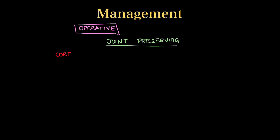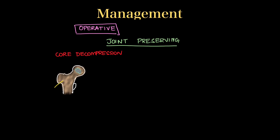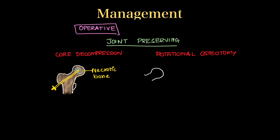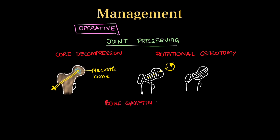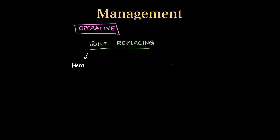Once disease reaches the collapse or advanced arthritic stage, operative management is used. There are joint-preserving and joint-replacing types. Joint-preserving methods include core decompression — removing a core of dead bone to decompress pressure, reduce edema, and promote healing — rotational osteotomy, where the head and part of the neck are cut, rotated, and fixed back, and bone grafting, where dead tissue is removed and replaced with a vascular autologous graft. For advanced stages, joint-replacing options include hemiarthroplasty or total hip replacement.